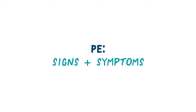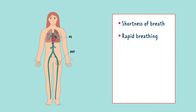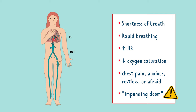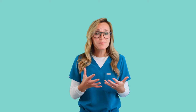When a patient has a pulmonary embolism, their symptoms can be alarming. Watch for shortness of breath and rapid breathing, as the body tries to compensate for that blocked airway. The patient will have an increased heart rate as the heart works harder to compensate, and oxygen saturation will go down. Often these patients complain of chest pain and may feel anxious, restless, or afraid. Some patients experience a sense of impending doom — if a patient ever mentions this, act. Take it seriously, because the body works in amazing ways and it is your responsibility as a nurse to listen and advocate for them.